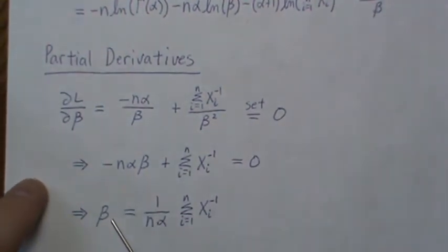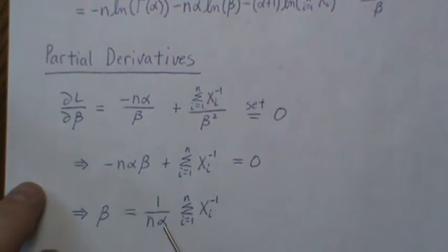And so the maximum likelihood estimator is this, but we don't know alpha yet, so once we solve for alpha, then we can plug it into this, and then we have the maximum likelihood estimator for beta.